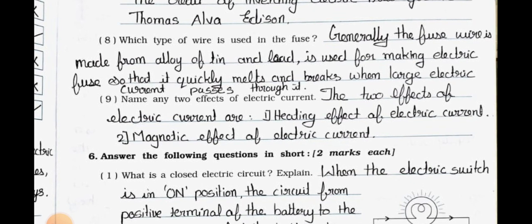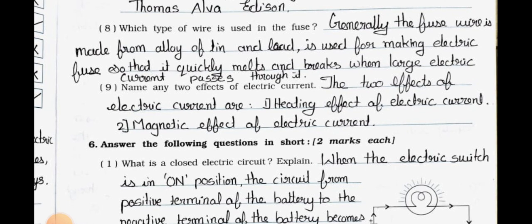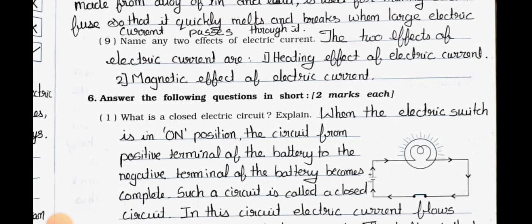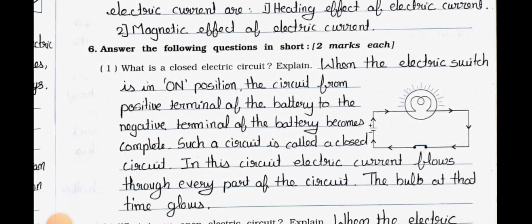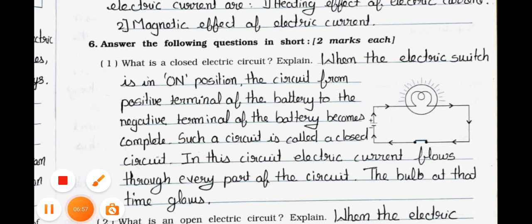Question 9: Name any two effects of electric current. Answer: The two effects of electric current are number 1 — heating effect of electric current, and number 2 — magnetic effect of electric current. Now we will see main six in the next video part 2. Stay safe, stay healthy. Okay, bye.